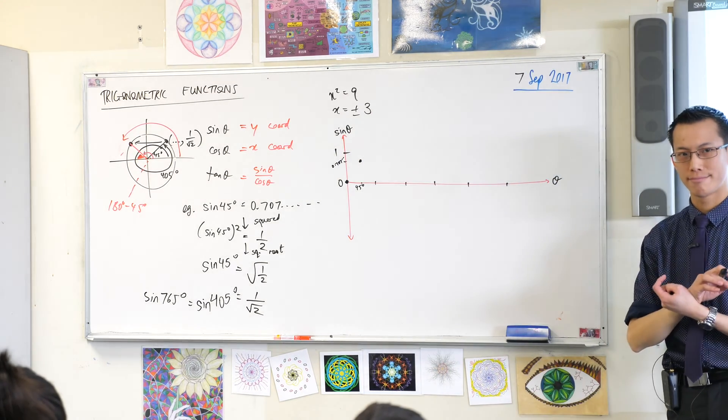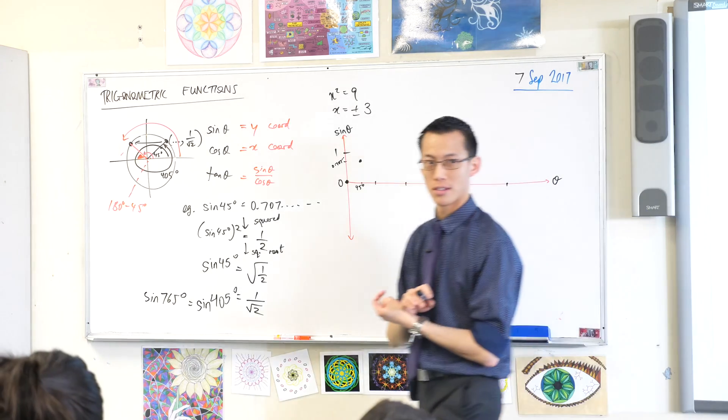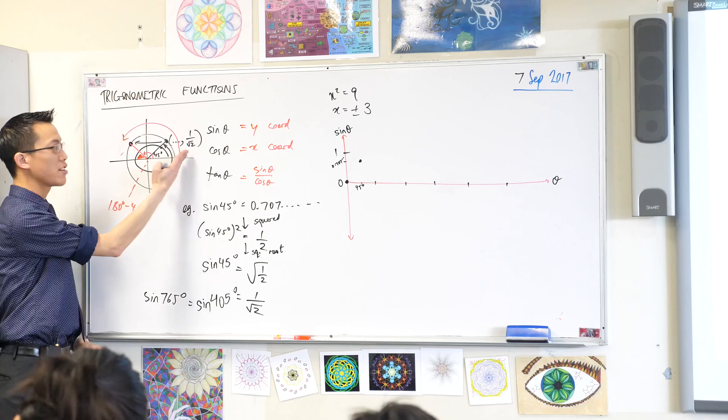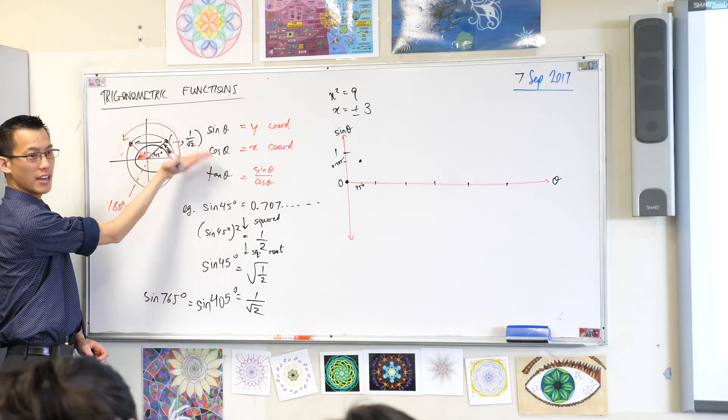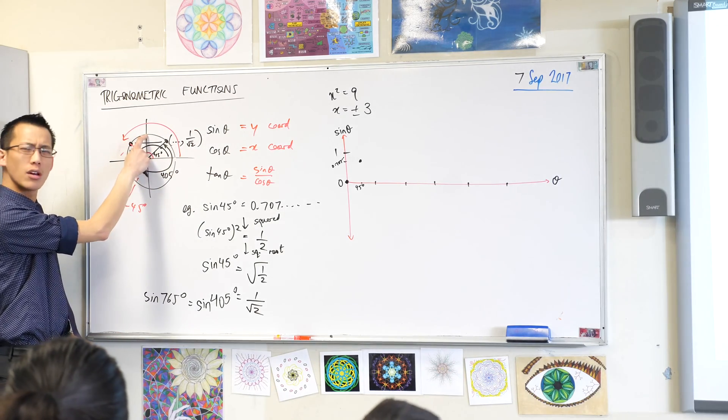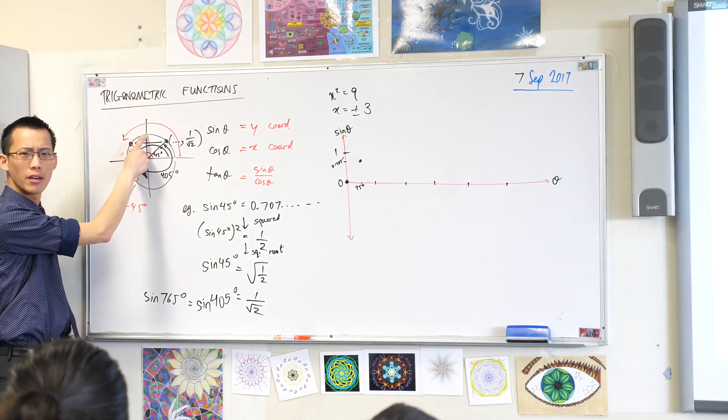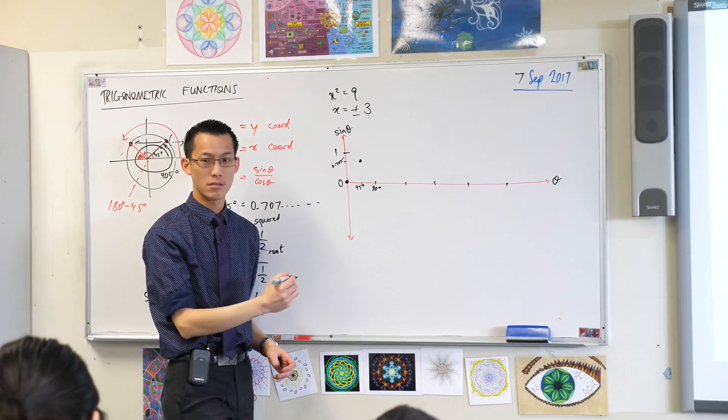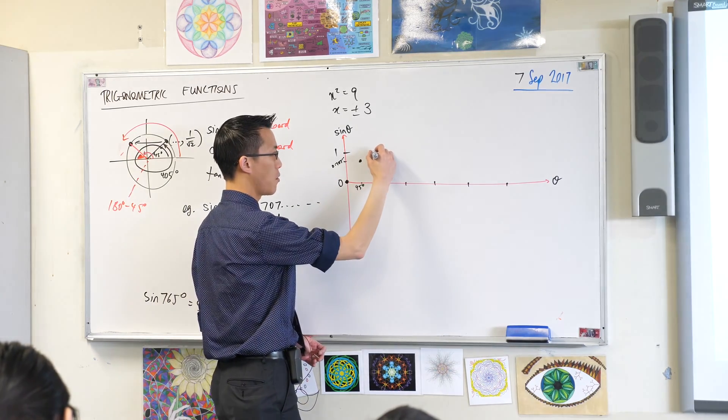What's sine of 90? Have a look. Where's 90? You've got your big unit circle, the nice one that you drew yesterday. 90 degrees takes you up onto, you've rotated up and you're here. So what's the y-coordinate up there? It's 1. So sine of 90 degrees should be up here at 1.